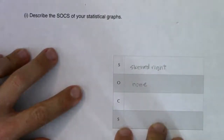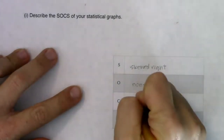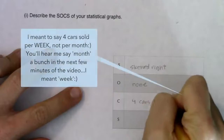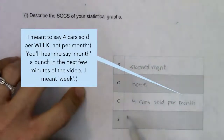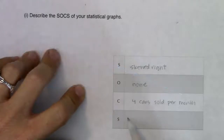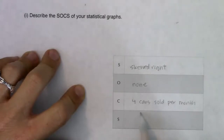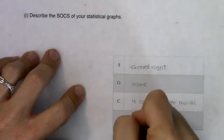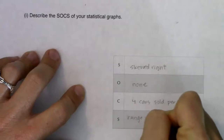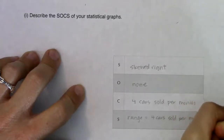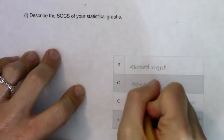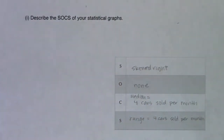For outliers: none. For center, I'll use the median: 4 cars sold per week. For spread, I'll use the range: low of 3 and high of 7, so the range is 4 cars sold per week. You could also report the IQR, standard deviation, or variance for spread. And that is the end of chapter 2 — good luck!